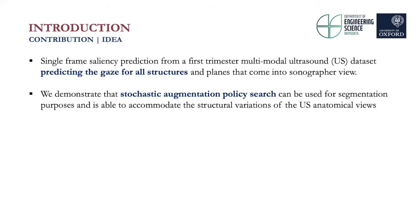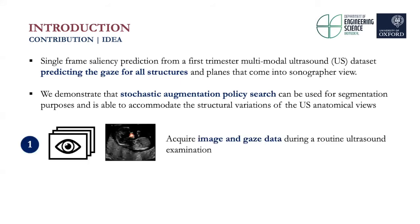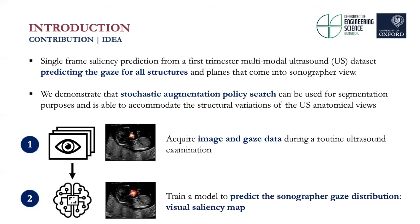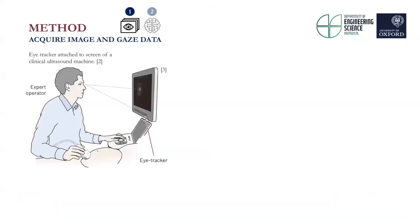Our approach consists of two steps. First, we need to acquire image and gaze data during a routine ultrasound examination. Second, we train a model to predict sonographer gaze distribution, referred to as a visual saliency map — the model predicts the likelihood of the sonographer fixating at a specific point. For step one, we attach an eye tracker to the monitor of the standard ultrasound machine and track the gaze of the sonographer while the scan is performed.